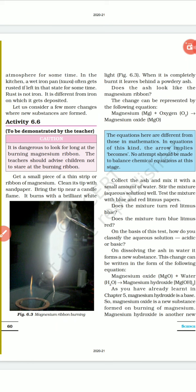Another example is given in activity 6.6. Take a thin strip or ribbon of magnesium, clean it with sandpaper, bring a tip near a candle flame. It burns with a brilliant white light. When it is completely burnt, it leaves behind ash. Does this ash look like the magnesium ribbon?